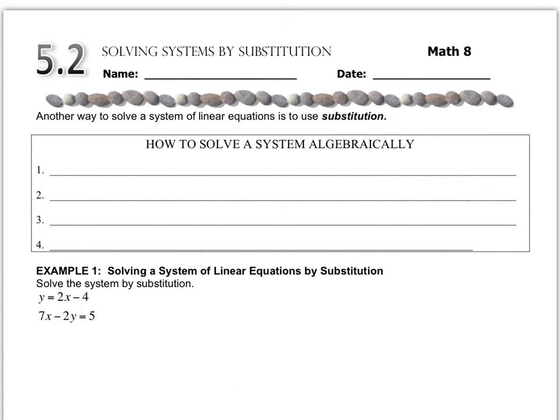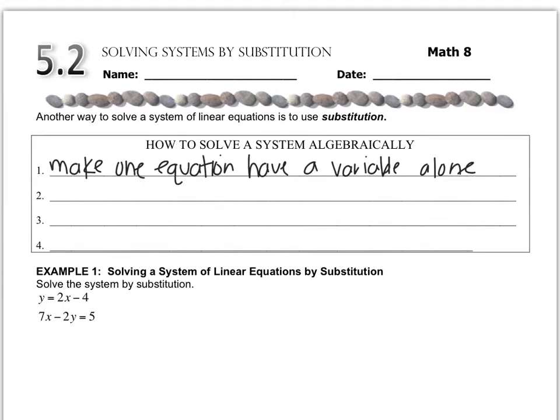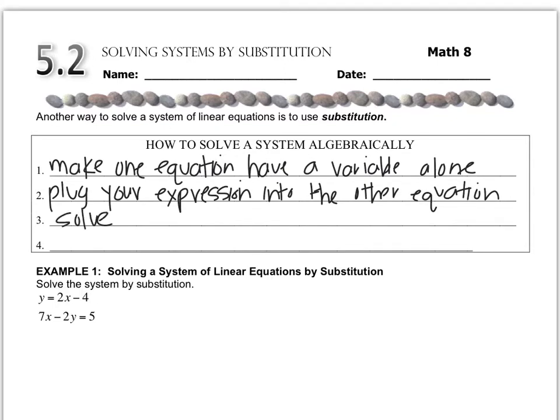I'm going to give you the steps. They're going to sound like gibberish, just play along. Then as we go through the examples they will make more sense. The first thing you want to do with the substitution technique is to make one of your equations have a variable alone. The second thing is you take that expression and plug it into the other equation. Then you solve it. The final step is to take your answer and plug that in to get the other coordinate point.